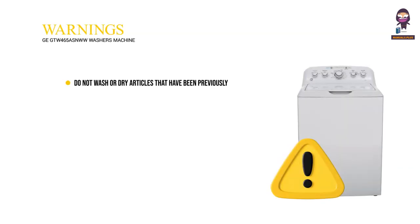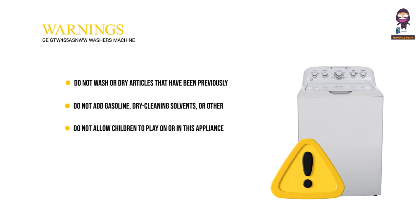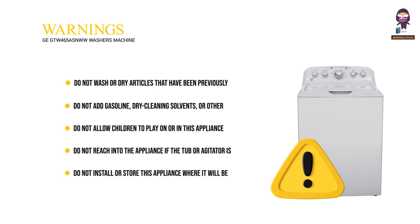Warnings: Do not wash or dry articles that have been previously cleaned in, washed in, soaked in, or spotted with gasoline, dry cleaning solvents, or other flammable or explosive substances, as they give off vapors that could ignite or explode. Do not add gasoline, dry cleaning solvents, or other flammable or explosive substances to the wash water. Do not allow children to play on or in this appliance. Do not reach into the appliance if the tub or agitator is moving, to prevent accidental entanglement. Do not install or store this appliance where it will be exposed to the weather. Do not operate this appliance if it is damaged, malfunctioning, partially disassembled, or has missing or broken parts, including a damaged cord or plug.